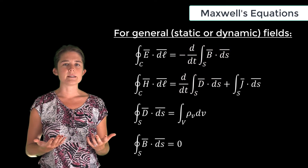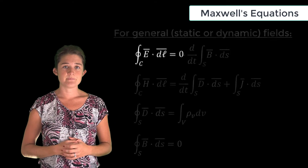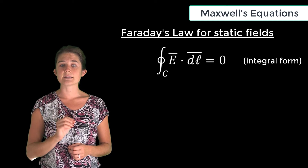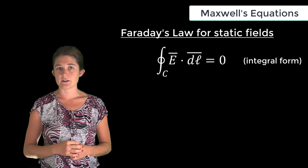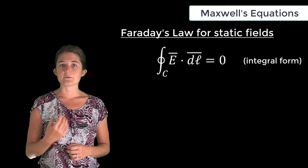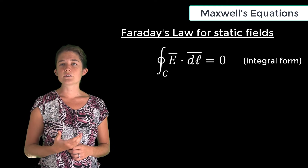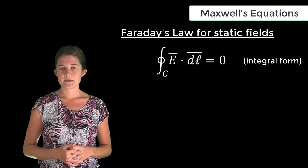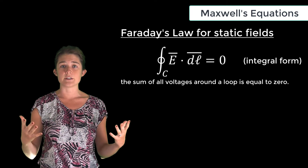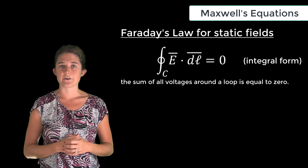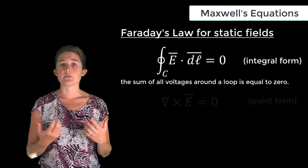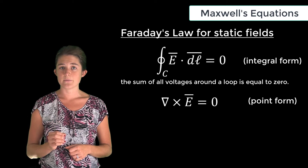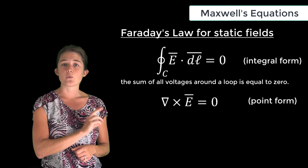Let's take a few minutes to consider each equation in turn. This is Faraday's law for static fields: the integral of E dot dl around a closed loop is equal to zero. Since the integral of E dot dl is voltage, this is actually a statement of Kirchhoff's voltage law — the sum of all voltages around any loop is equal to zero. In point form, the curl of the electric field is equal to zero. These two forms are equivalent.